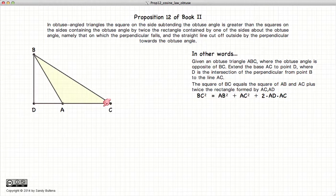BC is opposite the obtuse angle at A. In this situation, BC squared is equal to AC squared plus BA squared plus twice DA times AC.